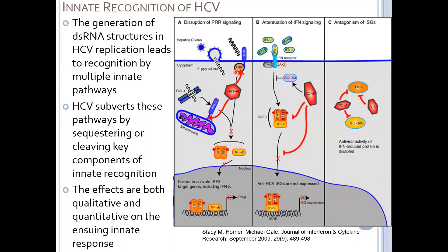Michael Gale went on to define many ways in which HCV, via its non-structural proteins, actually tries to interfere with this recognition. It has a protein that cleaves off IPS-1 from the mitochondria of the host cell. IPS-1 is the scaffold on which RIG-I sits to launch the type 1 interferon response pathway. So HCV actually makes a protein that just chops off a key component of the innate signaling pathway, dampening and qualitatively shifting the innate response.